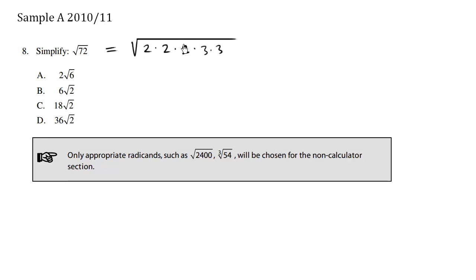So 2 times 2 is 4, 4 times 2 is 8, 8 times 9 is 72. So indeed this is correct.